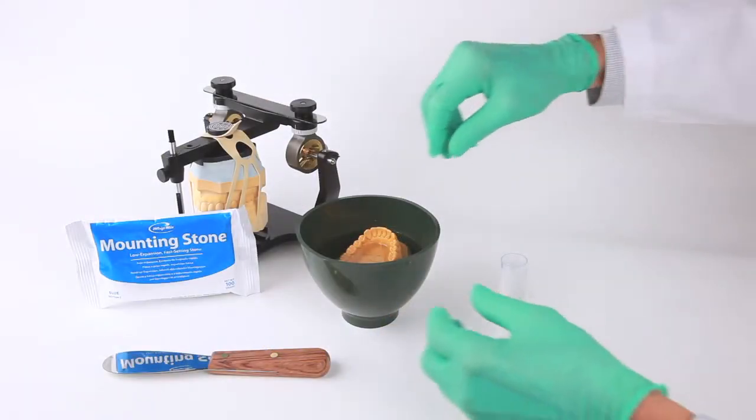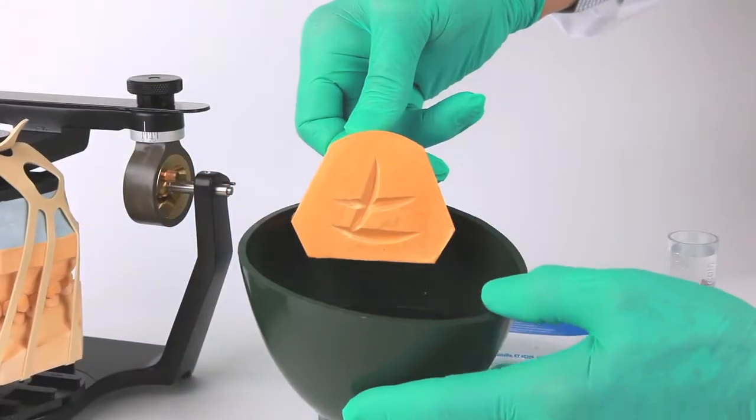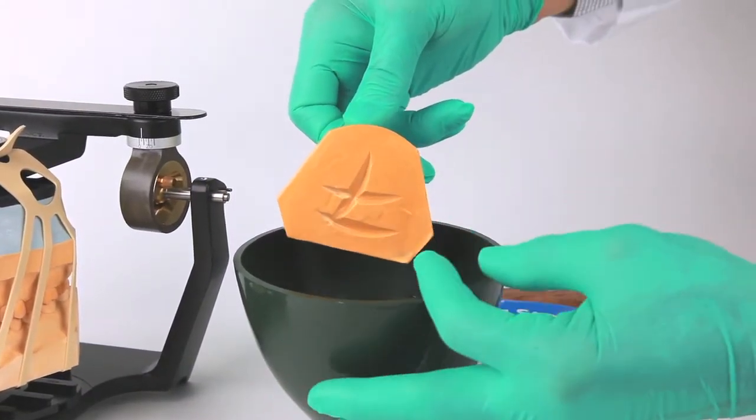To ensure adequate mounting strength, the cast should be soaked in water for 2 to 3 minutes and the base scored or notched to obtain maximum adhesion of the mounting stone to the cast base.